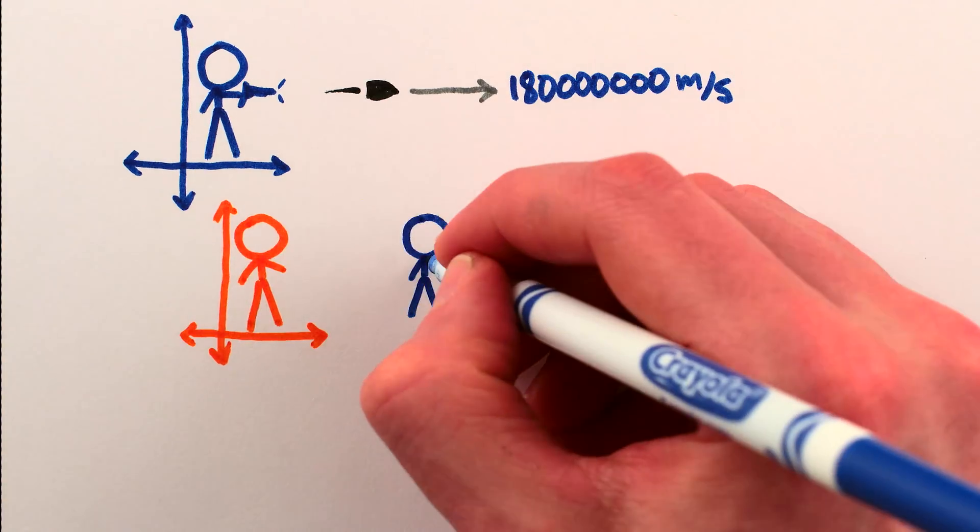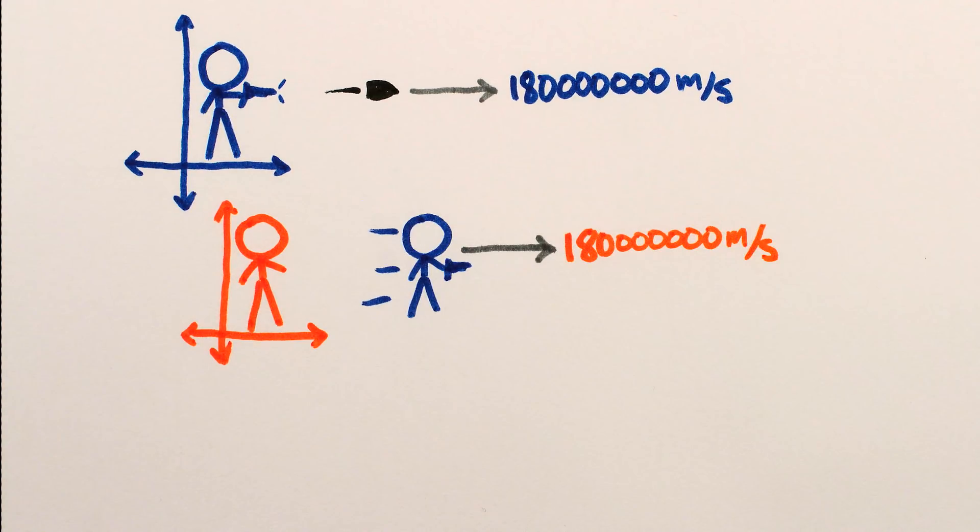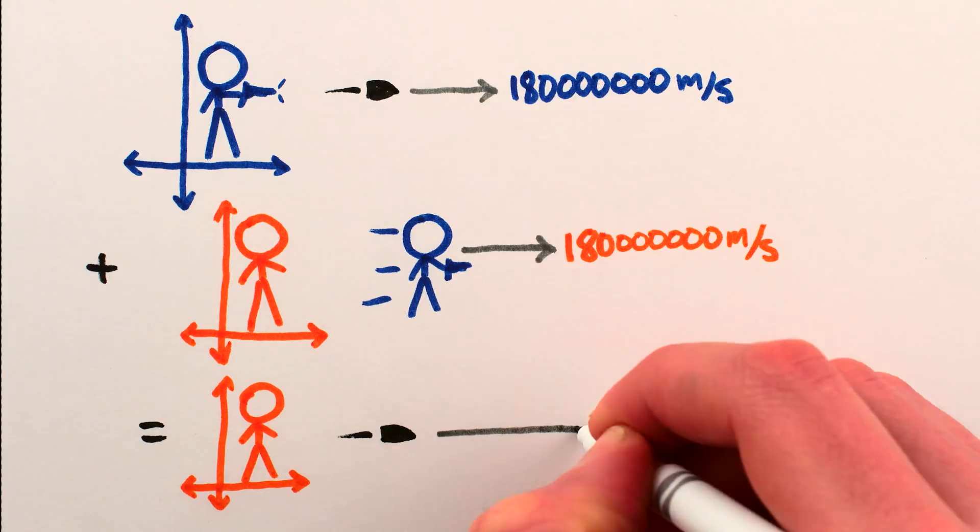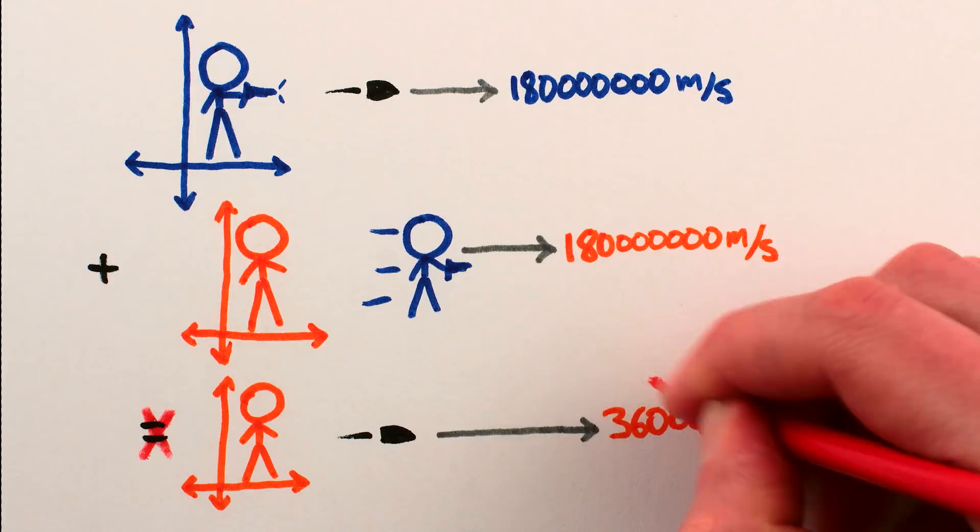The intuitive answer to this question is that if the death pellet is going 180 million meters per second to the right relative to you, and you're going 180 million meters per second to the right relative to me, then the death pellet must be going 360 million meters per second to the right relative to me, which is faster than light. And which is wrong.